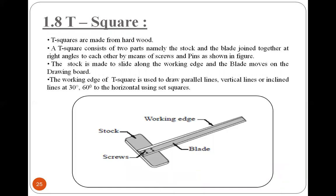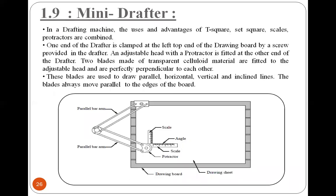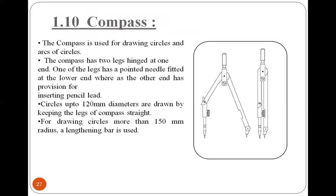The mini drafter consists of a parallel bar arm; one arm is connected to the T-square or scale. The scale has a protractor along with horizontal and vertical scales. The least count of the scale is 1 millimeter. The blades are used to draw parallel horizontal, vertical, and inclined lines. The blades are moved parallel to the edges of the board. The compass is used to draw circles or arcs; for engineering drawing you can use a small bow compass or a large bow compass. Circles up to 120 mm diameter are drawn by keeping the legs of the compass straight.